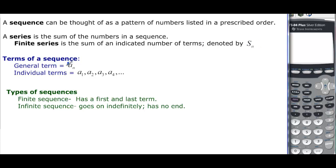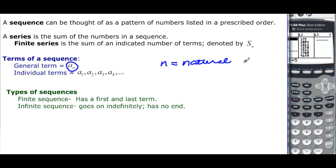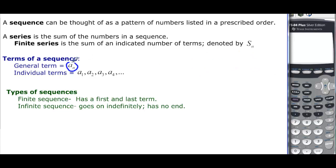That's going to be very important: a sub n. n is going to be equal to a natural number. When we're talking about term numbers, we're not going to talk about integers — there won't ever be a negative term number, and there won't be any decimal term numbers. They're going to be natural numbers: 1, 2, 3, 4 — the counting numbers. n is the number of the term. If we don't know how many terms, we have a sub n, and the individual terms would be a sub 1, a sub 2, a sub 3, a sub 4, all separated with commas.